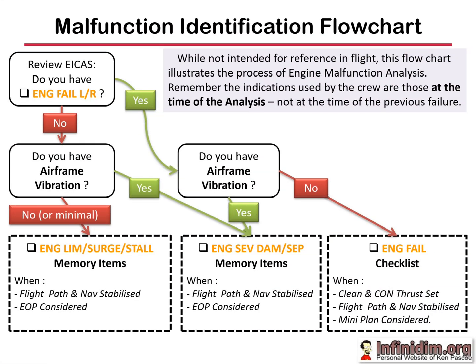The flowchart is designed to illustrate the process - it's not something you drag out on a flight deck or find laminated in the dash. This is basically just a pictorial representation of what we do. Remember that the indications used by the crew are those at the time of the analysis, not at the time of the previous failure. First question: do you have engine fail on ICAS? That's asking is the engine still running, used in reverse because that's how ICAS works. Engine fail - yes. Airframe vibration - no. It's just an engine failure.